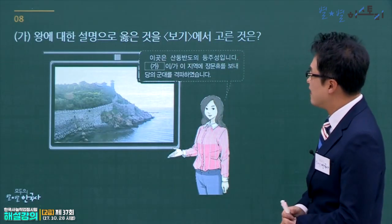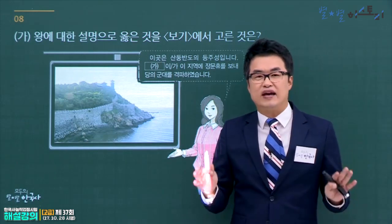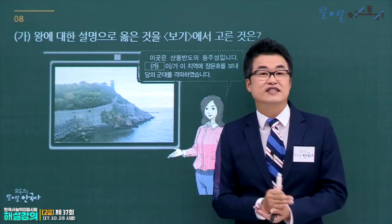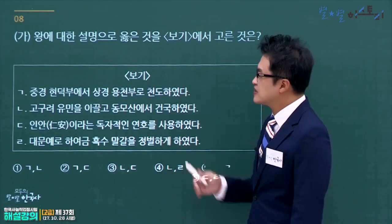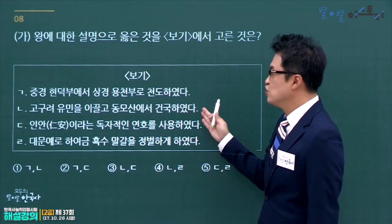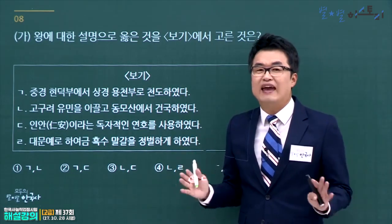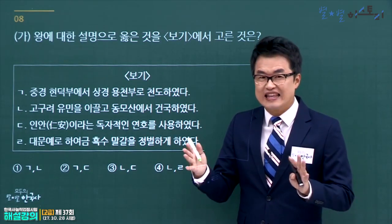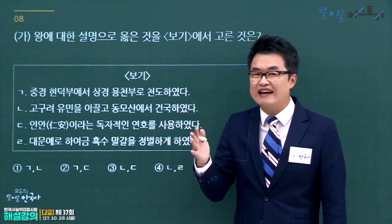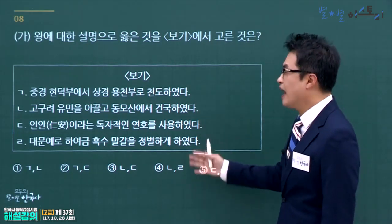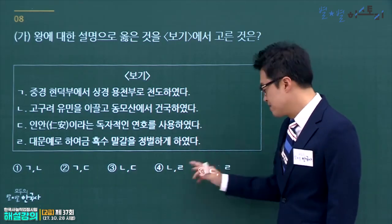발해 무왕에 대한 문제입니다. 산둥반도 등주성을 장문휴를 보내서 당의 군대를 격파한 것이 발해 무왕입니다. 무왕에 대한 설명을 고릅니다. 중경현덕부에서 상경용천부로 천도는 문왕, 동모산 건국은 대조영입니다. 발해 연호는 무왕이 인안, 문왕이 대흥, 선왕이 건흥입니다. 무왕은 인안 연호를 사용하고, 흑수말갈을 정벌하는 정복 활동을 펼쳤습니다. 정답은 5번입니다.